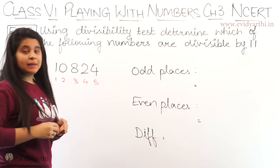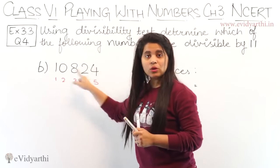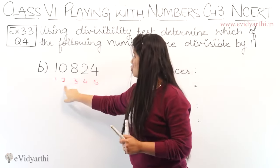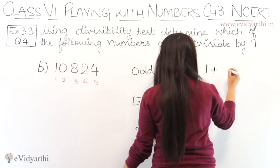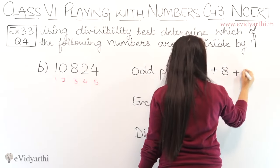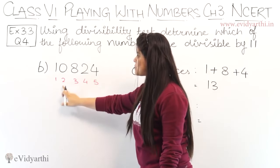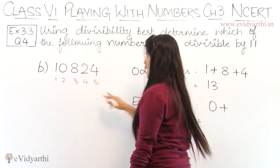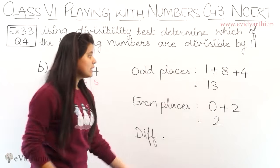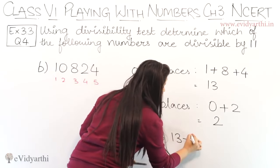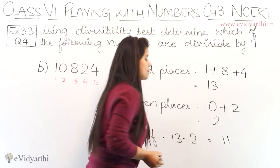Okay, here are the places. Now we add the odd place digits — positions 1, 3, and 5. We have 1, then 8, then 4. So the sum is 1 plus 8 plus 4, which gives us 13. Now, for even places — position 2 has 0 and position 4 has 2. So, 0 plus 2 is 2. Now we find the difference: 13 minus 2 equals 11.